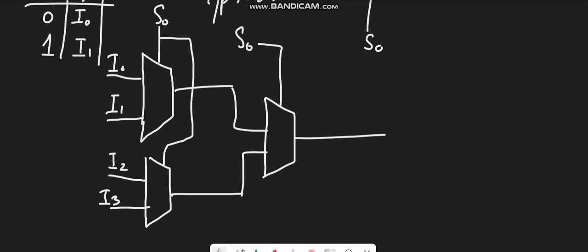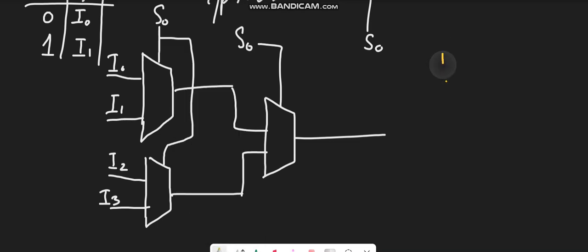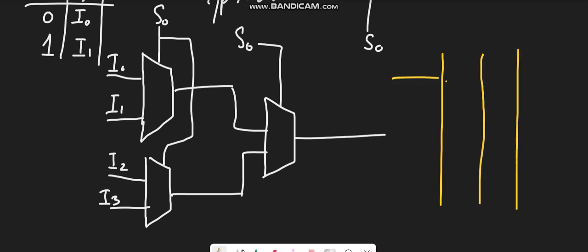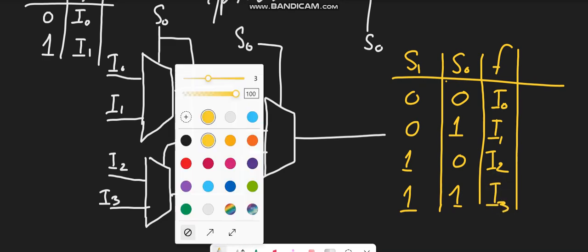I have used three 2-to-1 line multiplexers. Now let's draw the table to understand the functionality. This is s1, this is s0, and here is the output function. When s1 and s0 are both 0, you will have i0 at the output. When they are 0 and 1, you will have i1. When 1 and 0, you will have i2. And when both select lines are 1, you will have i3 at the output side.